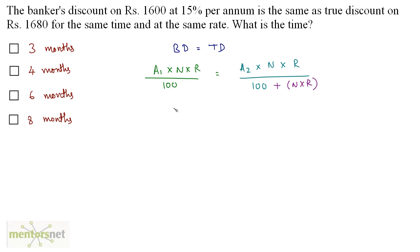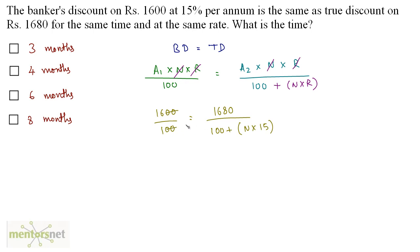We can cancel out the A·N·R terms. Putting in the values: 1600 divided by 100 equals 1680 divided by 100 plus N times 15. The zeros cancel, and moving terms: 1600 plus 16 times 15 times N equals 1680.